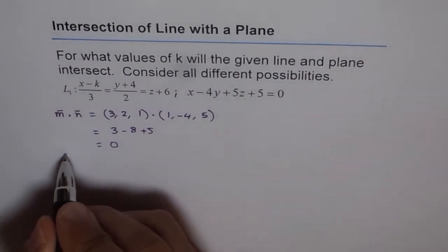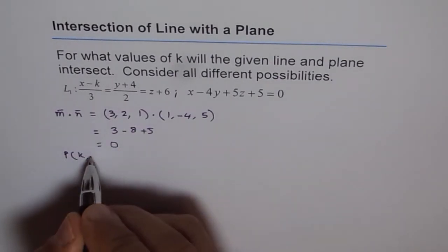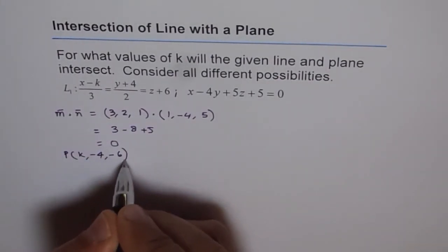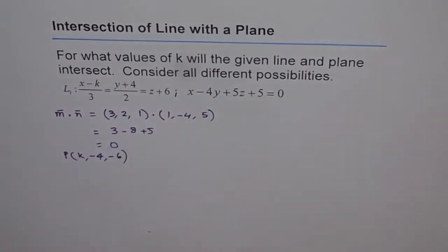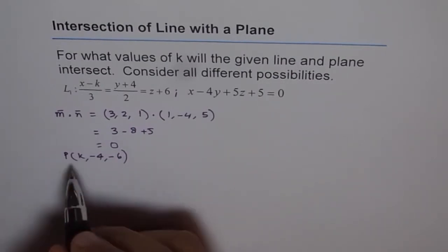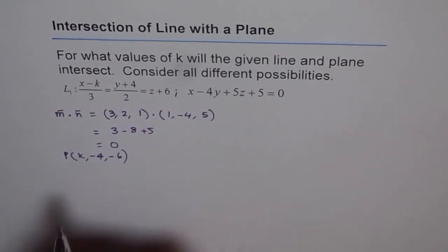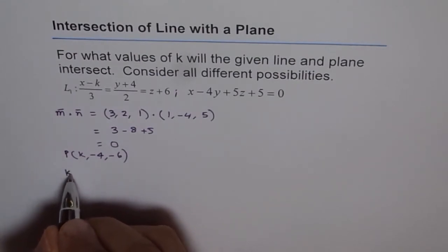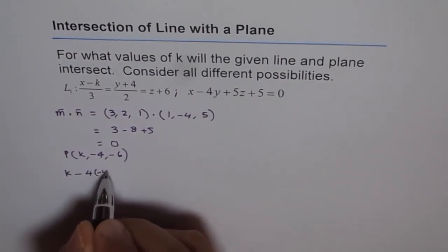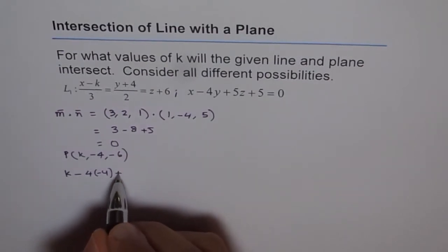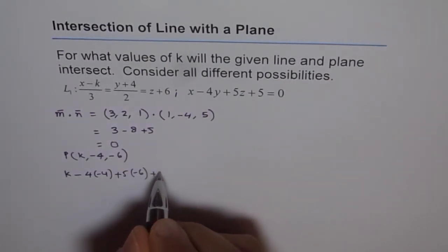The point on the line is (k, −4, −6). This point lies on the line, so we plug this into the plane equation to find the value of k that makes the line lie on the plane. Substituting: x = k, y = −4, z = −6 gives: k − 4(−4) + 5(−6) + 5 = 0.